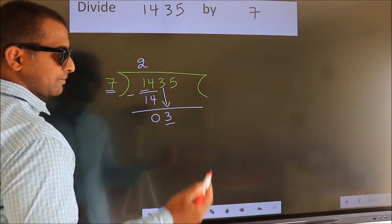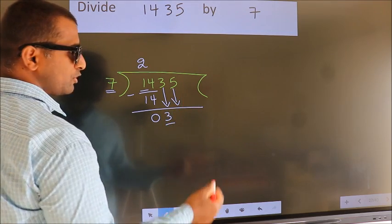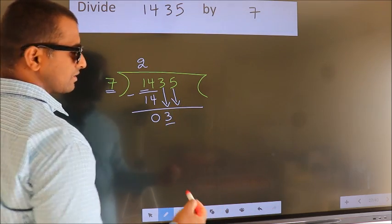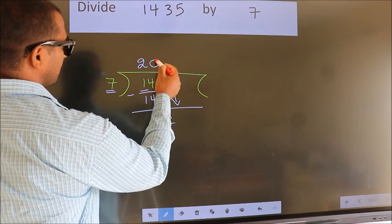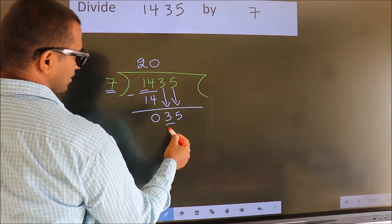So, we should bring down the second number. And the rule to bring down second number is put 0 here. Then only we can bring down this number. So, 35.